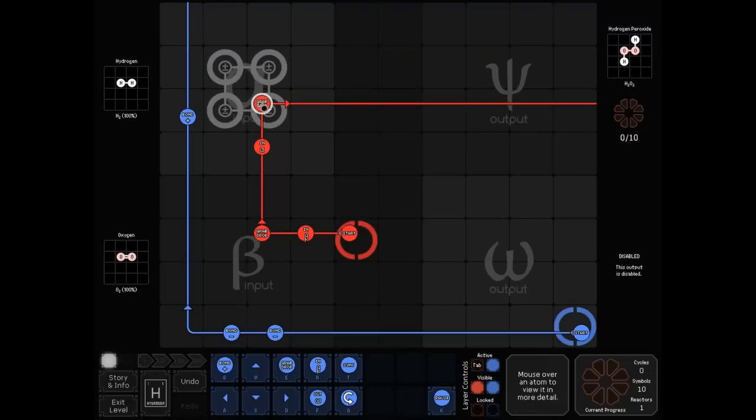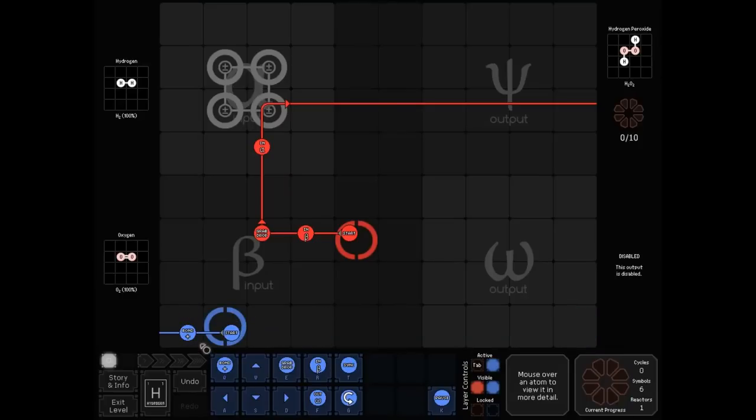So, that makes this level quite easy. In fact, we can, let's see here. Let's just have blue hammer on bond constantly. And we'll do red bond minus there.